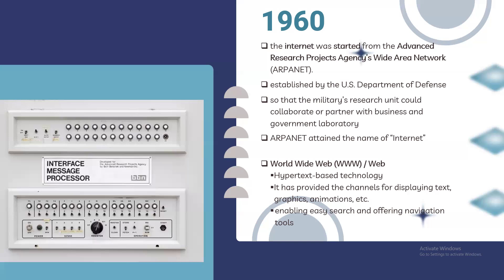Then came the birth of the triple-W — the World Wide Web — a hypertext-based technology providing channels for graphics, animation, and more. When we talk about the history of the internet, January 1, 1983 is considered the official birthday of the internet. Prior to that, various computer networks did not have a standard way to communicate with each other. The new communication protocol established was the Transfer Control Protocol/Internet Protocol, or TCP/IP.